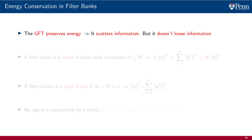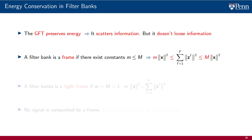Thinking of filter banks as transforms analogous to the GFT draws attention to energy conservation. The GFT preserves energy: the energy at the output is the same as the energy at the input, implying that the GFT scatters information across GFT components without losing it — whatever signatures were contained in signal x are still present in its transform. The same is not necessarily true of filter banks, unless they are designed to have that property.